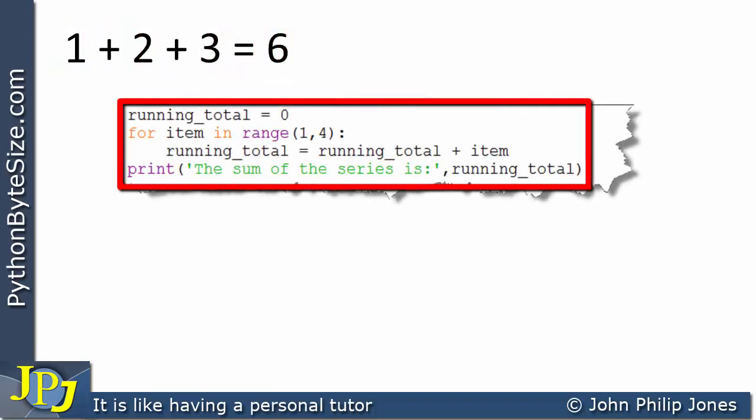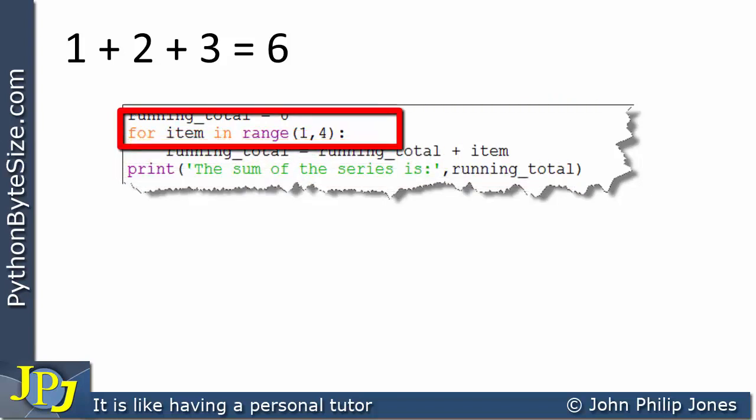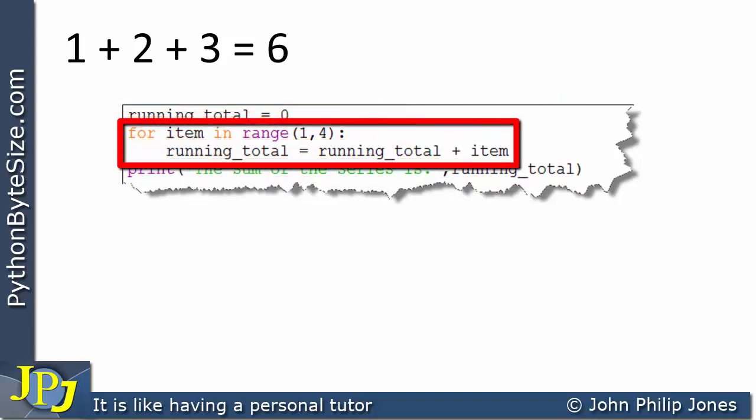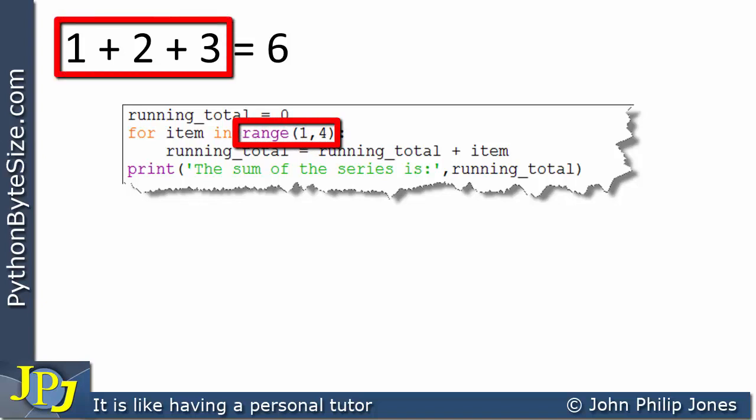This is the Python program that will add up the first three numbers. We're setting a running total to zero. I've got a for loop saying for item in the range, and in the brackets you can see it's 1, 4. That means the for loop will produce numbers from 1 through 2, but not including the 4. In other words, the range here will include the numbers 1, 2, and 3.